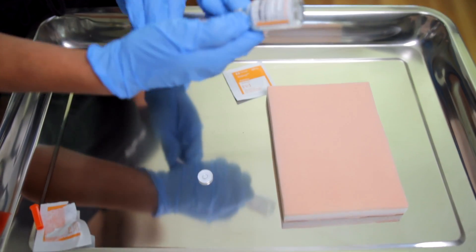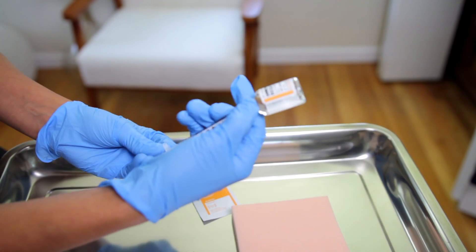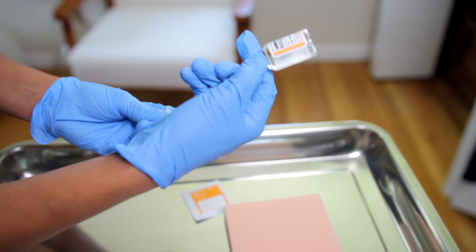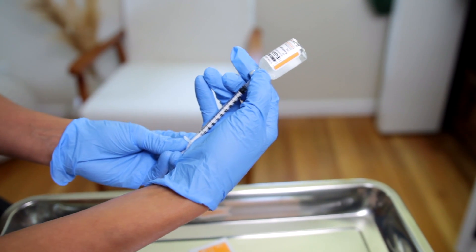I am then going to invert the vial upside down, and this is where I'm going to withdraw the three units. So this is one, two, three. So that is three units.